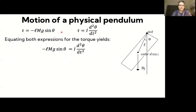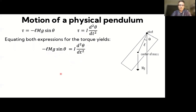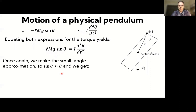We plug in the expression for torque: minus L·mg·sin(θ) = I·d²θ/dt². This is our equation of motion. The sine of theta makes things a bit complicated, as we have both sin(θ) and the second derivative of theta.